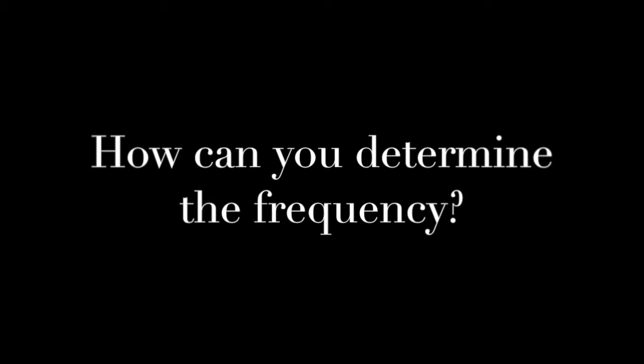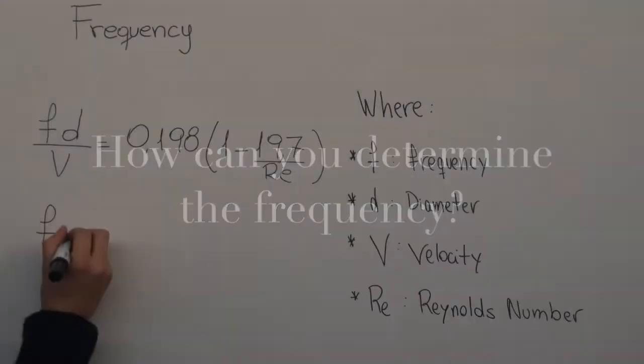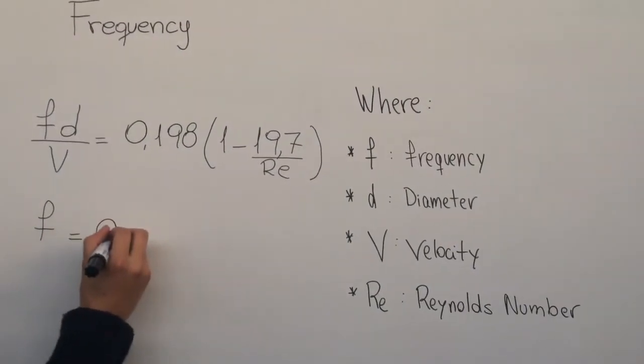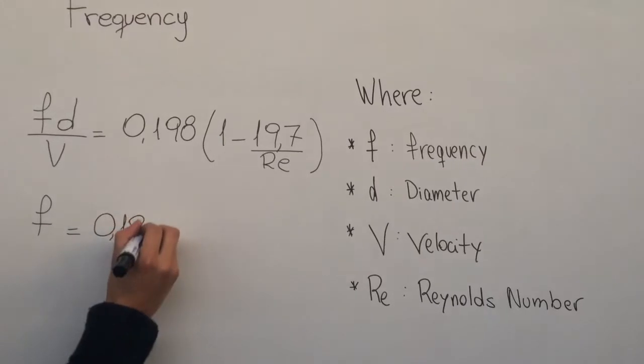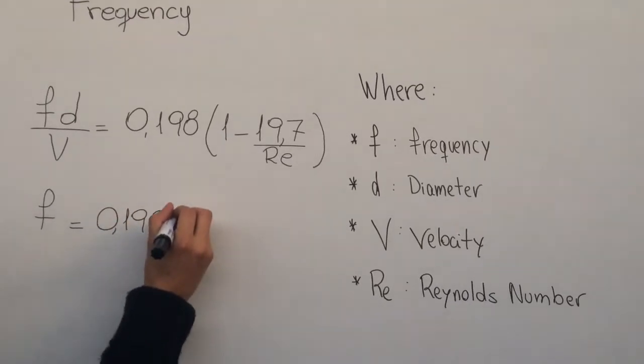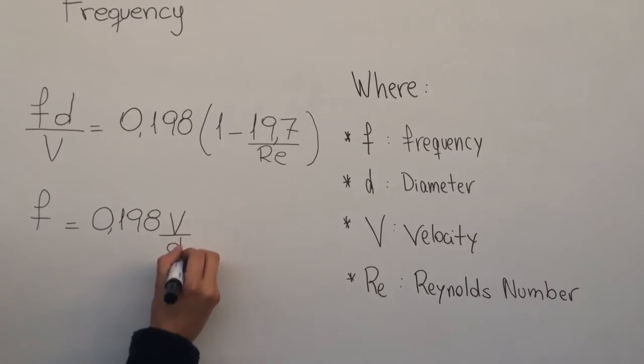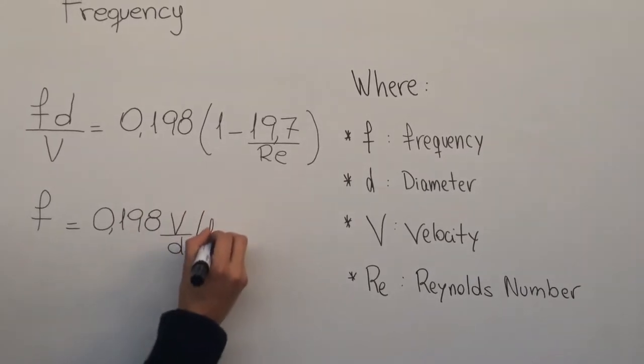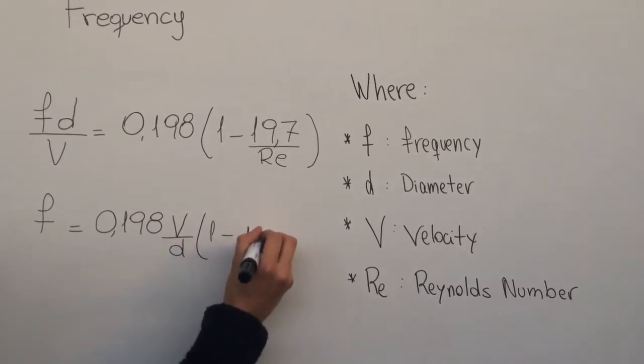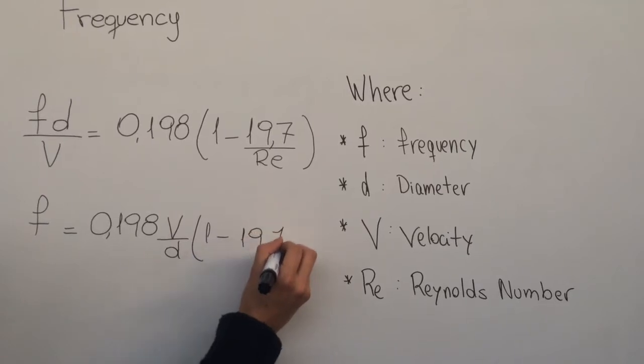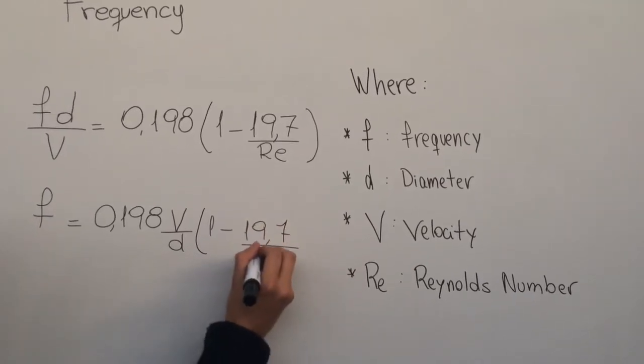And how can you determine the frequency? A very good experiment to see the relation between the vortices of a fluid is to consider the geometry of a body. In this case, we used a cylinder. By having a Reynolds number that produces a laminar fluid, it can be related with the Strouhal number.